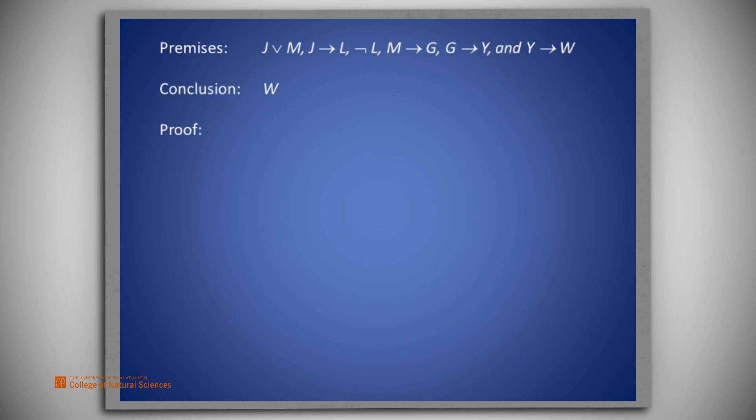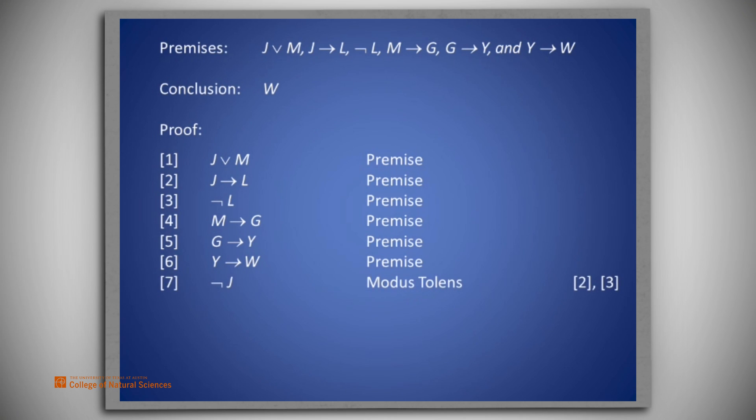We begin by listing all of our six premises. So we have line 1, J or M. Line 2, J implies L. Line 3, not L. Line 4, M implies G. Line 5, G implies Y. And line 6, Y implies W. Now, on line 7, we use modus tollens from lines 2 and 3 to conclude that J must be false.